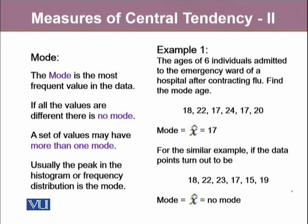Let's take an example. The ages of six individuals admitted to the emergency ward of a hospital after contracting flu: 18, 22, 17, 24, 17, and 20. To calculate mode, we do not have to order the data. We only need to find out which observation is the most frequent. In this data, 17 is the most frequent observation. Mode is denoted by x hat if it's calculated from a sample. But if it's calculated for population, we denote it by mu hat.